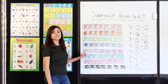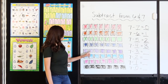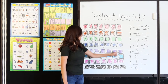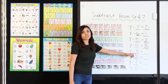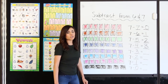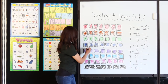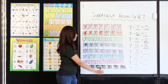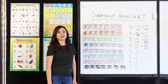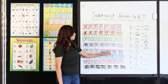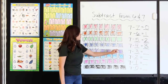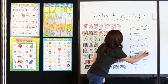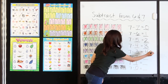I have 7 purple squares — 1, 2, 3, 4, 5, 6, 7. I'm going to cross off the 3 that I'm taking away: 1, 2, 3. How many do I have left? 1, 2, 3, 4. 7 minus 3 equals 4. Very good.